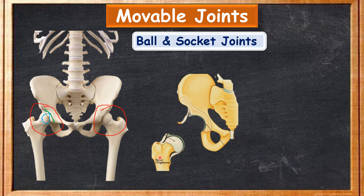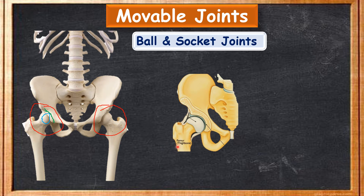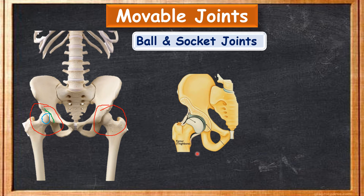This is the pelvic girdle — the hip bone — and this is the femur, which ends in a ball shape. You can see: this is the ball shape, and this cavity is the socket. This ball is fixed in this socket, and this allows maximum movement. A ball and socket joint allows maximum movement.